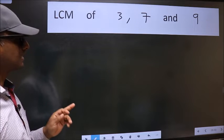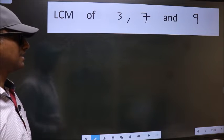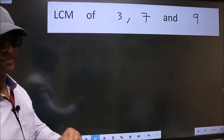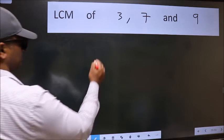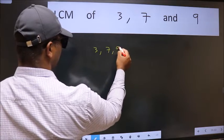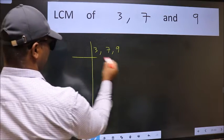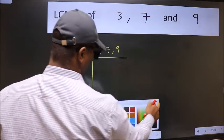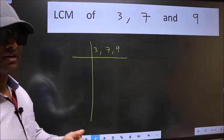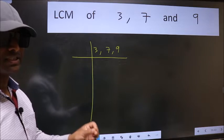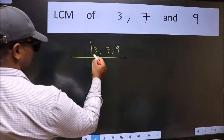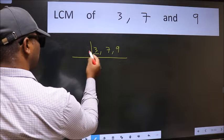LCM of 3, 7 and 9. To find this LCM, we should frame it in this way: 3, 7, 9. This is your step 1. Now we should focus on the first number, which is 3 here. 3 is a prime number.